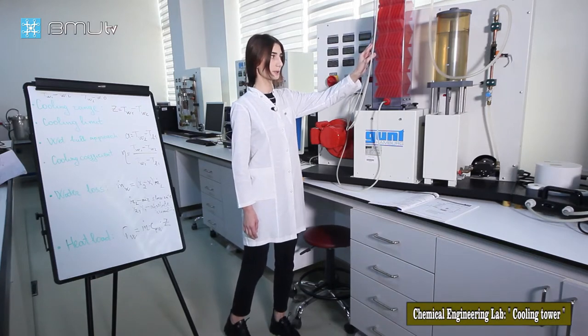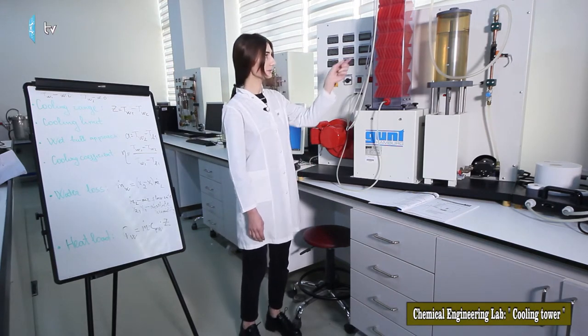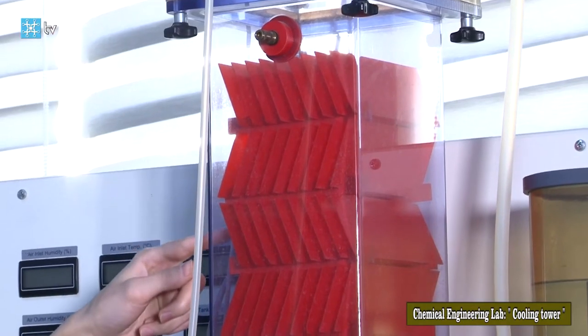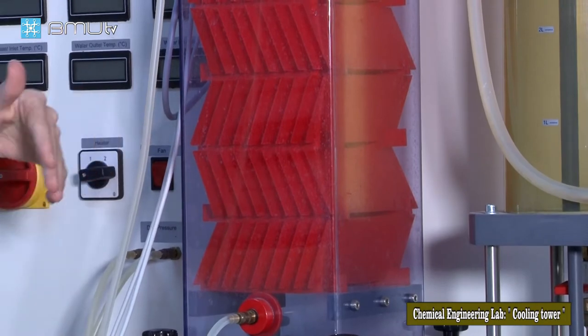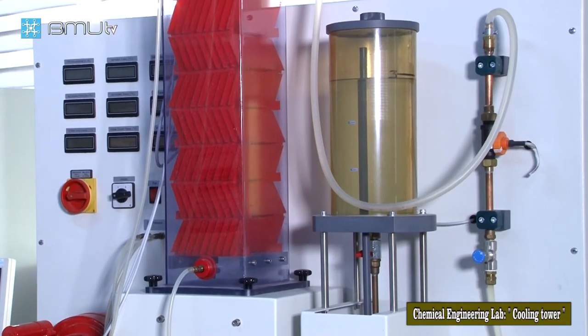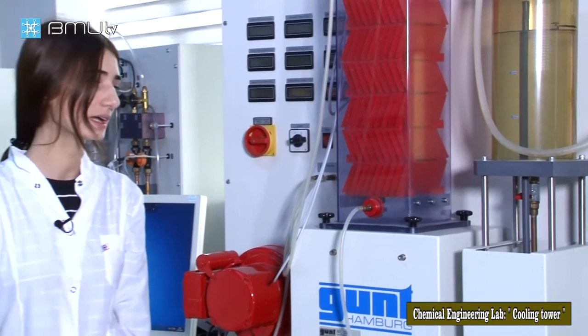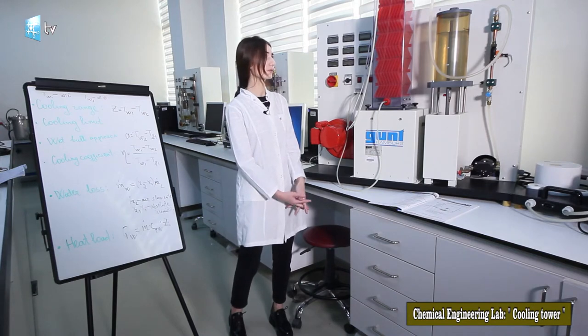The cooling column is transparent, allowing us to observe the process clearly. There are slats inside it which are arranged at angles to each other. The aim of this part is to increase the surface area and give maximum time for water and air to contact each other. The cooling performance of the device depends on its design. The packing density is one of the most important characteristics of the cooling tower, because it affects the cooling capacity and cooling efficiency of the device.